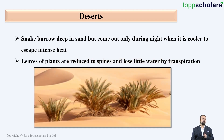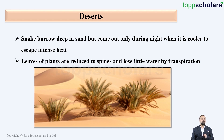Also, there are plants present in the desert. The leaves of these plants are highly reduced into spines so that they lose little water by transpiration. The spines have very low surface area, therefore lower the surface area, lower will be the rate of transpiration.